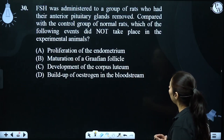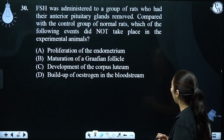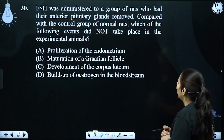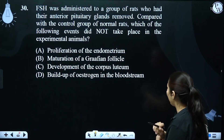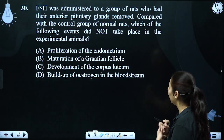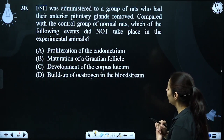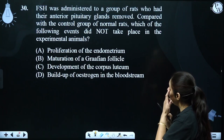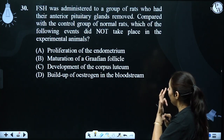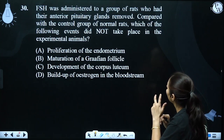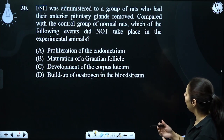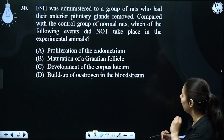FSH was administered to a group of rats who had their anterior pituitary gland removed, compared with the control group of normal rats. Which of the following events did not take place in the experimental animals? The anterior pituitary gland was removed.